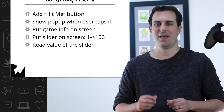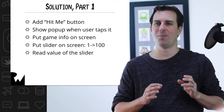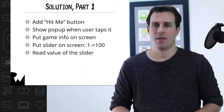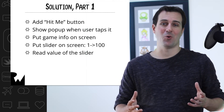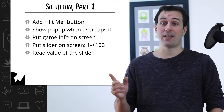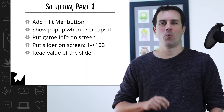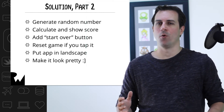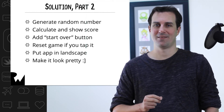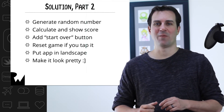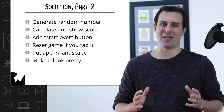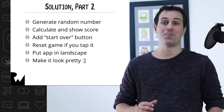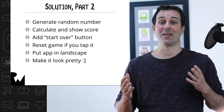This is what I came up with. I simply took the gameplay description and broke it down into small, bite-sized chunks. First, we need to add a hit me button to the screen. We need to show a pop-up when the user taps that button. We need to put some game information on the screen, like what the current score is or what the round is. We need to put a slider on the screen that goes from 1 to 100. We need to figure out the current value of the slider when the user hits the hit me button. We need to generate a random number to represent the target of what the user is supposed to select. We need to calculate the score, which is the difference between the actual value of the slider and what the user selected. We need to add a start over button to the screen, and if you tap it, it should reset the game. Finally, we need to put the app in landscape orientation, and of course, we need to make it look pretty.